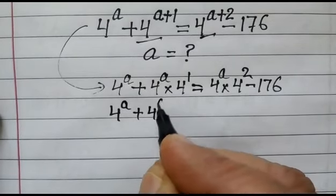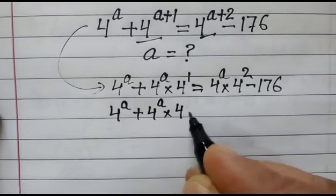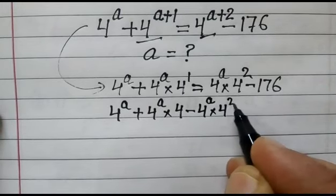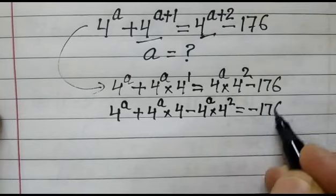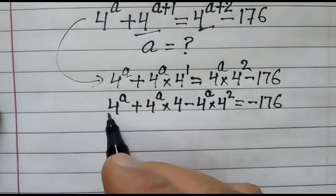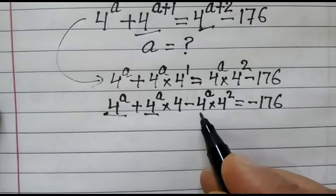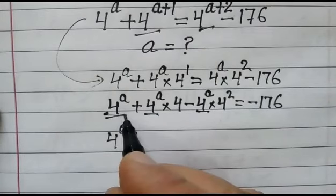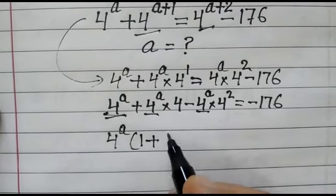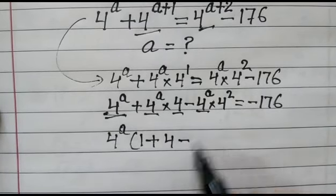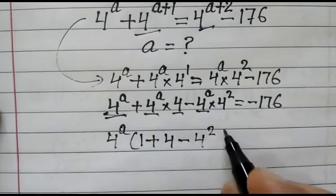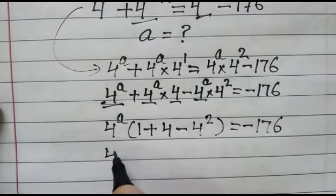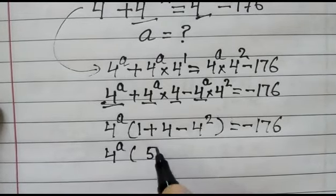So: 4^a plus 4^a into 4, minus 4^a into 4^2, is equal to minus 176. Now we will take 4 to the power a as common, giving us 4^a times (1 plus 4 minus 4^2) is equal to minus 176.